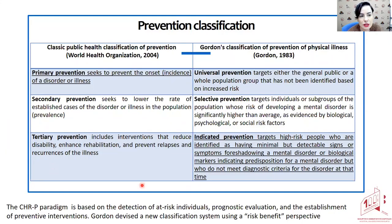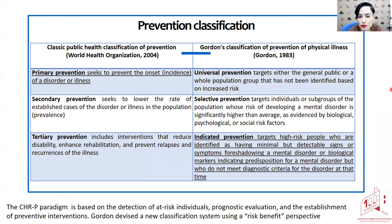This is the prevention classification. We can have the WHO classification — they define primary, secondary, and tertiary prevention. We are talking about primary prevention here because we are trying to decrease the onset of a psychotic disorder. But for me, it is more useful to use the Gordon classification, because he talks about universal, selective, and indicated prevention. The indicated prevention targets high-risk people who are identified as having subtle symptoms of a disorder and biological markers indicating predisposition for a mental disorder — in this case, psychosis — but who do not meet diagnostic criteria for the disorder at that time.